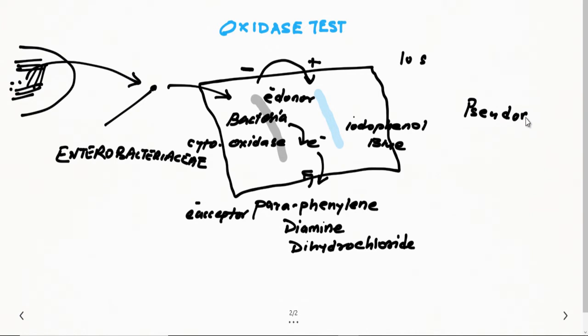Oxidase positive bacteria, if you have to remember, remember Pseudomonas, Vibrio, and Neisseria. These are important bacteria which give you the oxidase test positive.